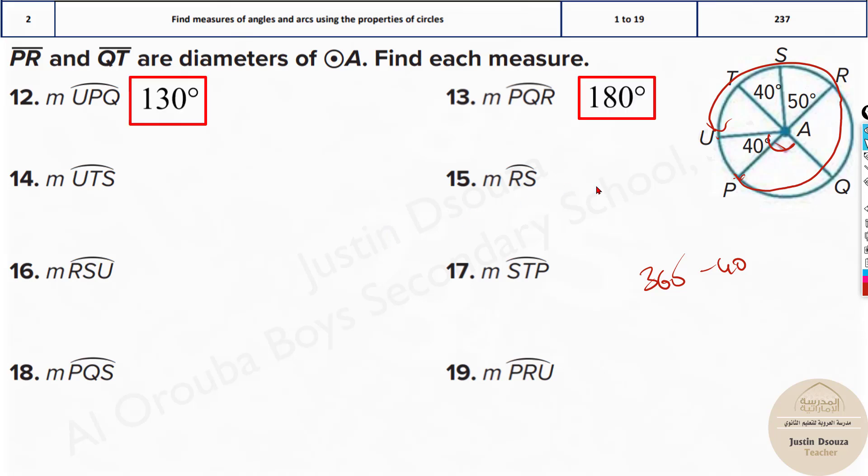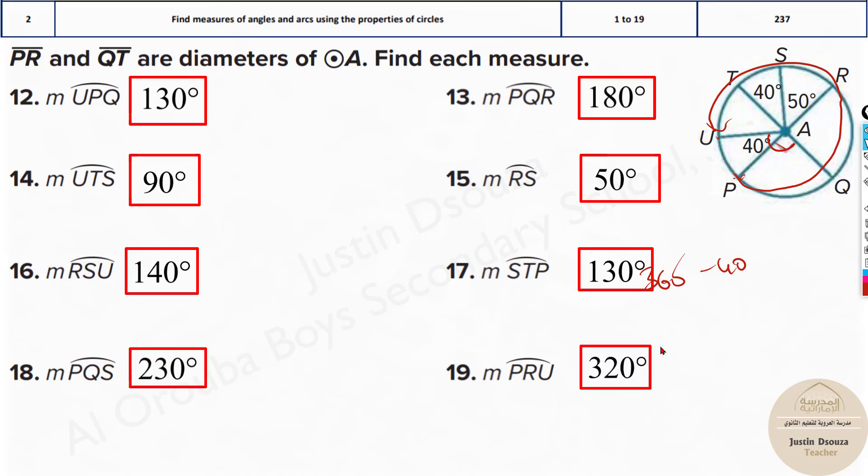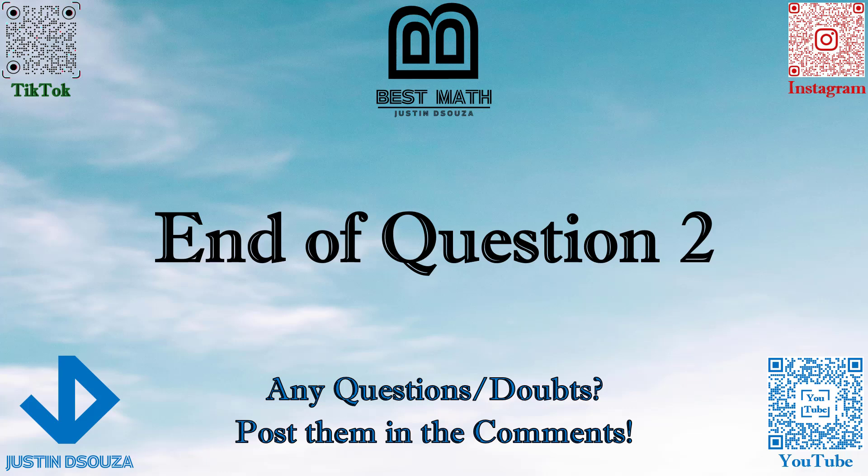All the others are very straightforward, the answers are simple, so please do try them by yourselves and then check the answers. 360 minus 40 is 320, that is the end of this question. I hope it is clear. If you have any doubts please consider re-watching the video or posting your doubts in the comments. I hope you all will head on to the next video.